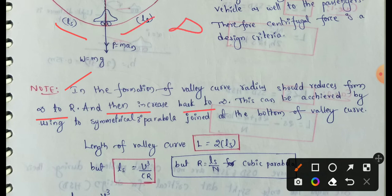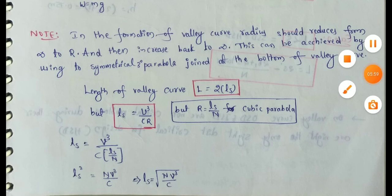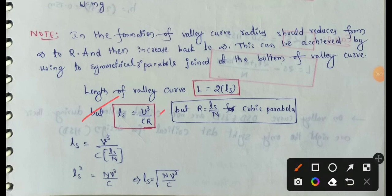The valley curve is a symmetrical third-degree parabola. The bottom of the valley curve has length L equal to 2 times Ls, where Ls is the length of each transition. The formula is: Ls equals V cubed divided by C times R, where small v is speed in meters per second, C is the rate of change of centrifugal acceleration, and R is the radius of the curve. For a cubic parabola, R equals Ls divided by N.